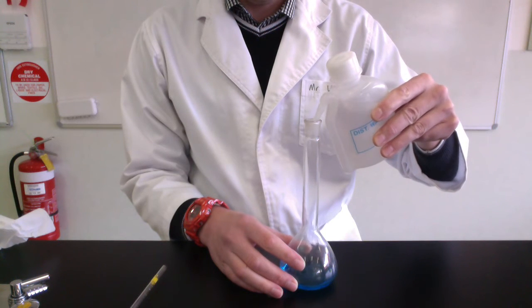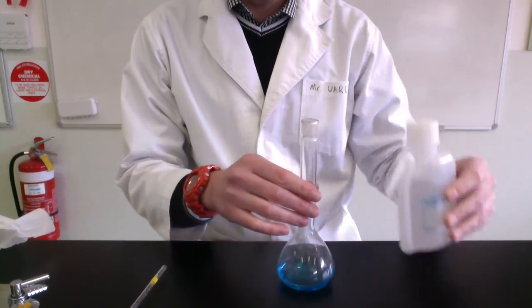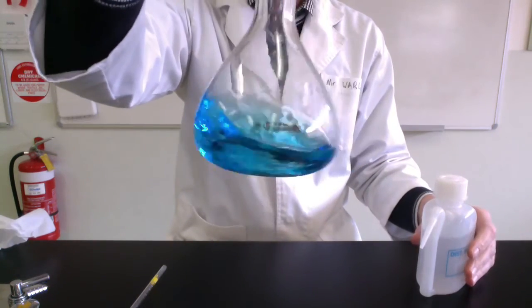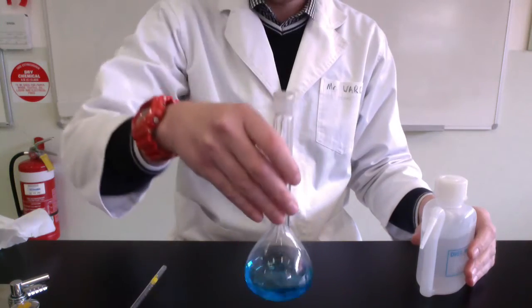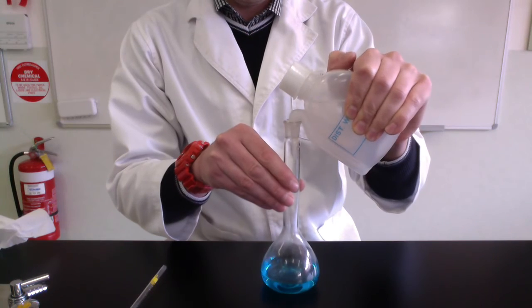Now it's time to do the dilution. Add a little bit of water. Once you've added some water, shake it around to make sure it mixes in nicely. Add until you're about half full in the bulb at the bottom of the volumetric flask.